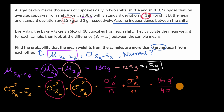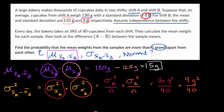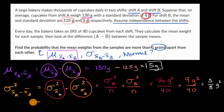For shift B, the population standard deviation is three grams, so the variance is nine grams squared, divided by the sample size of 40. Adding these: 16 plus 9 is 25, over the common denominator of 40, giving 25 over 40, which equals five eighths grams squared. The standard deviation is therefore the square root of five eighths, which is approximately 0.79 grams.